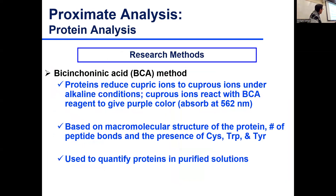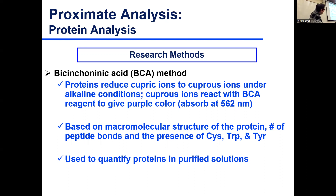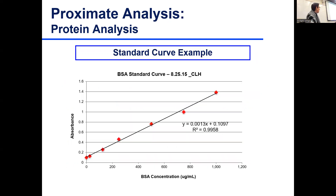The most common method in our lab is the BCA — bicinchoninic acid assay. The reagents come in a kit with instructions and it's very simple. You have your clear protein solution; it's based on reducing a reagent that has cupric iron. Peptide bonds are reducing, but also the presence of tryptophan and tyrosine specifically are reducing — they reduce cupric to cuprous iron, and then you measure the change in color at a specific absorption wavelength. You need a standard, and in this case we use bovine serum albumin as a standard.